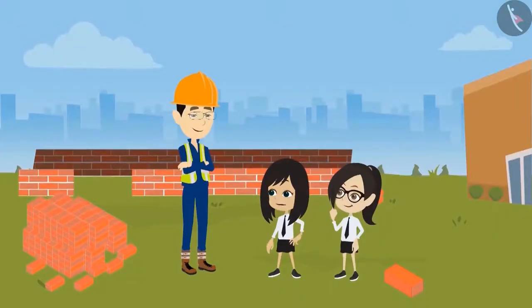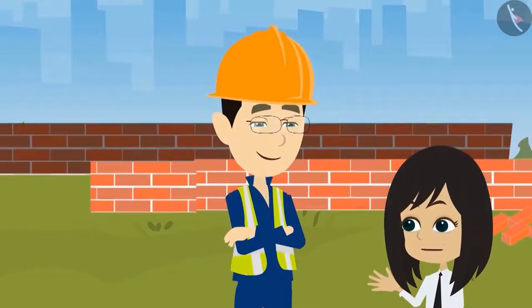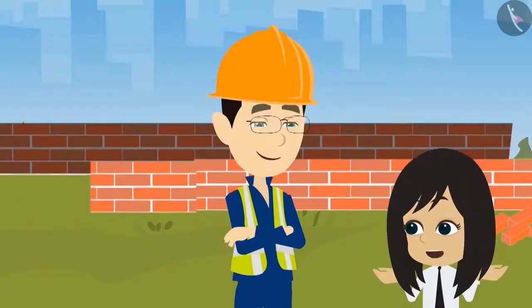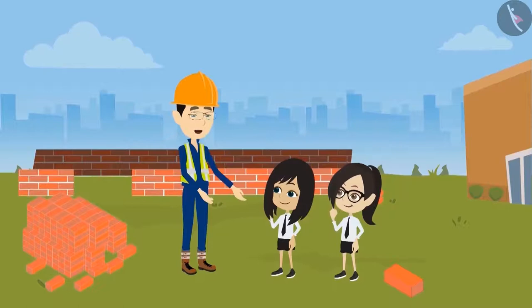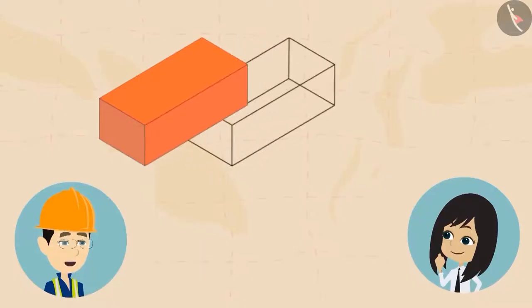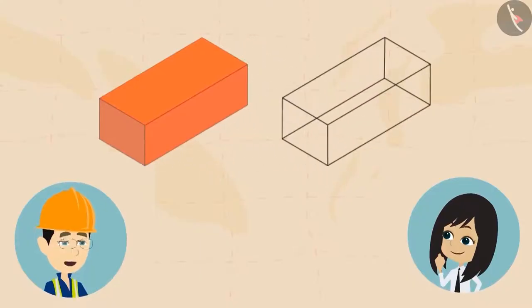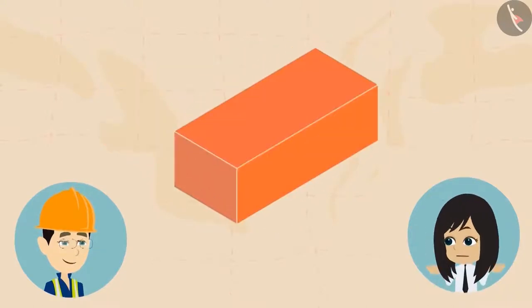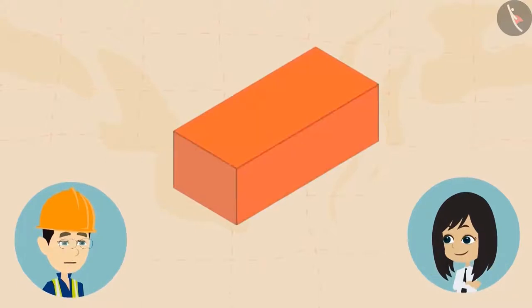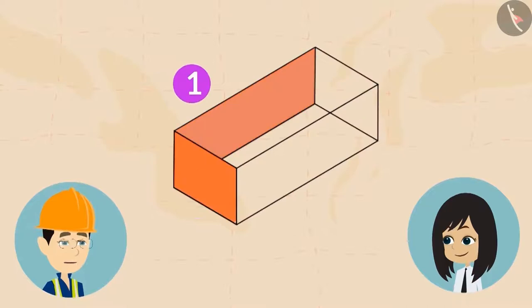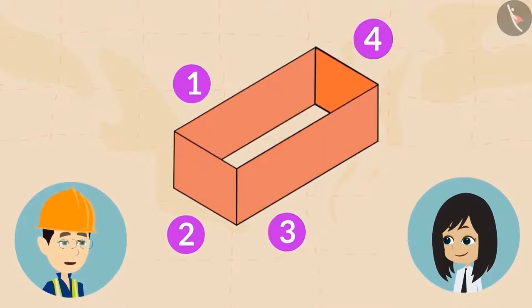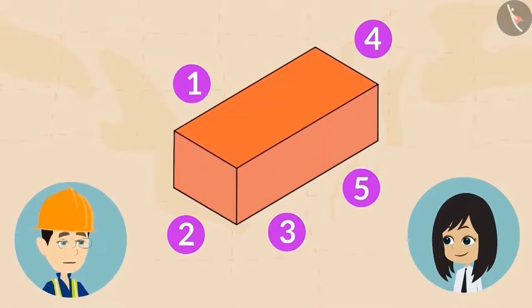All bricks are of the same rectangular shape. In mathematics, this shape is called a cuboid. Every brick has six faces — one, two, three, four, five, and six.